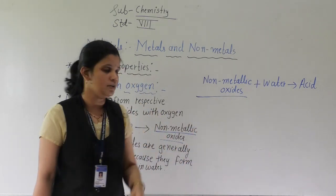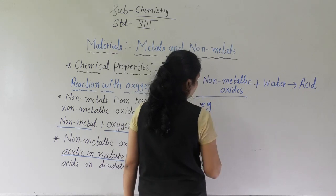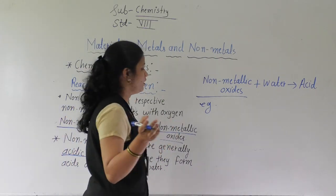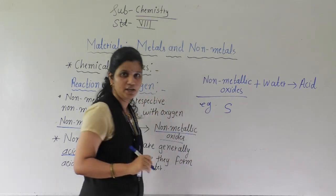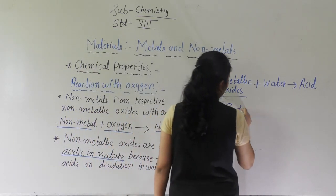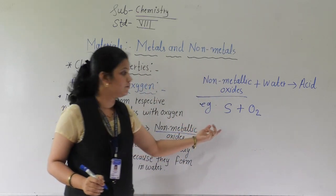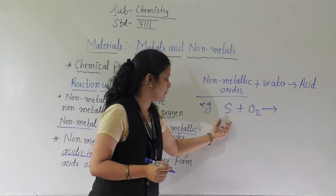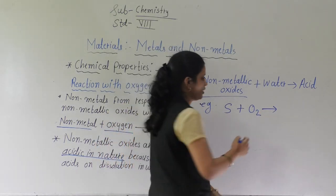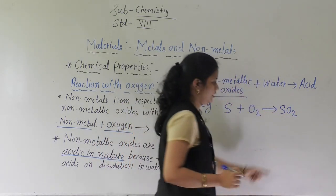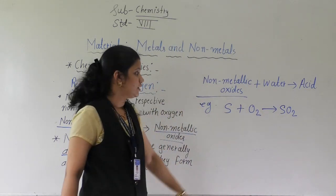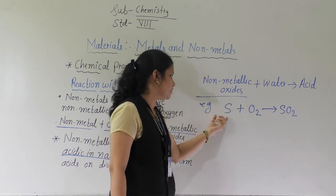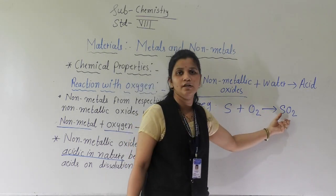Now I will give one example. Do you know sulphur? The symbol of sulphur is S. When sulphur reacts with oxygen, what will be the product? When sulphur reacts with oxygen it forms sulphur dioxide. This is the non-metallic oxide formed. When sulphur reacts with oxygen, it forms sulphur dioxide.